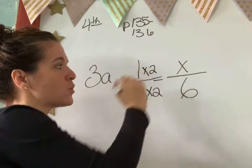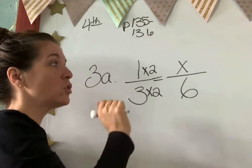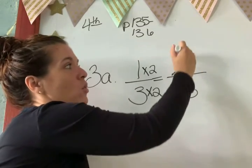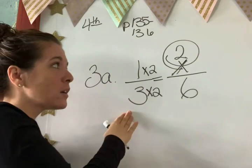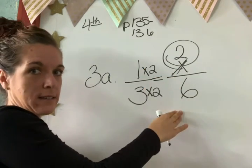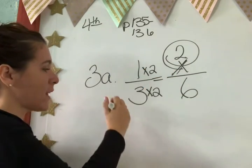Now that exact same number that you multiply down here, you need to multiply up here to get your answer. So 1 times 2 equals what? Keanu? 2. And that is your answer. So 1 third equals 2 over 6.